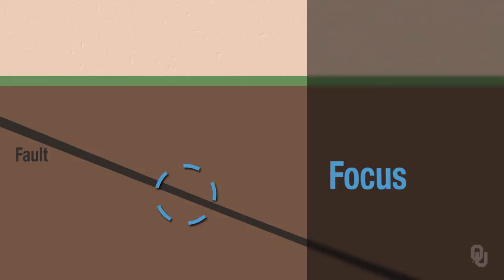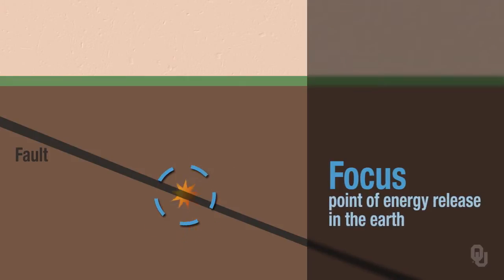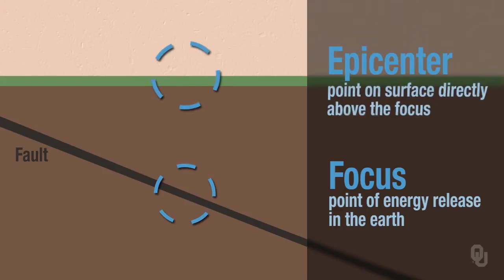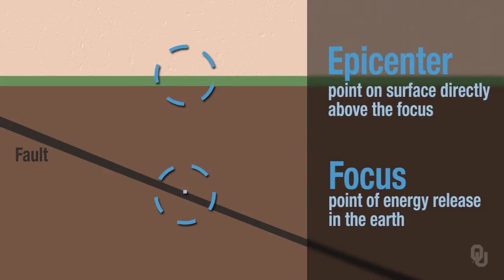Today we are going to discuss earthquakes. When rocks are brittle and stress is applied, they can break, and that can produce an earthquake. The focus of the earthquake is the point of energy release within the earth. The epicenter of the earthquake is the point on the surface directly above the focus.